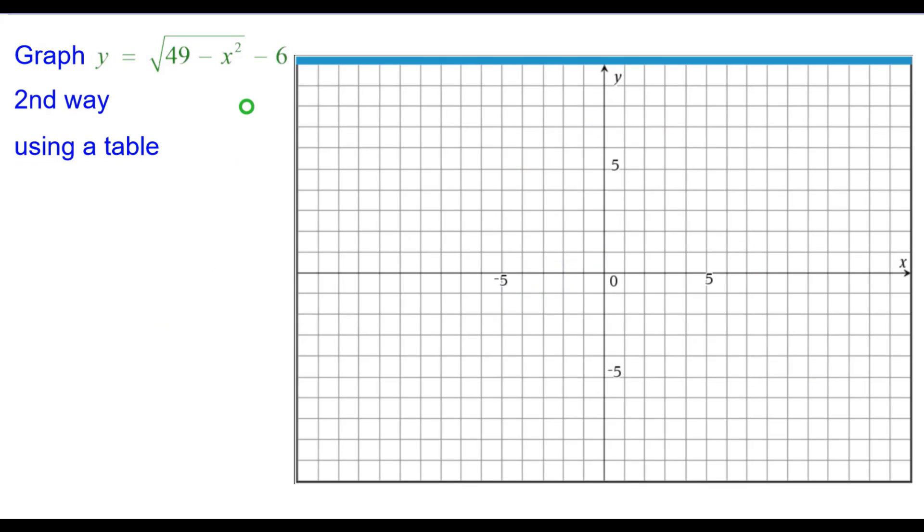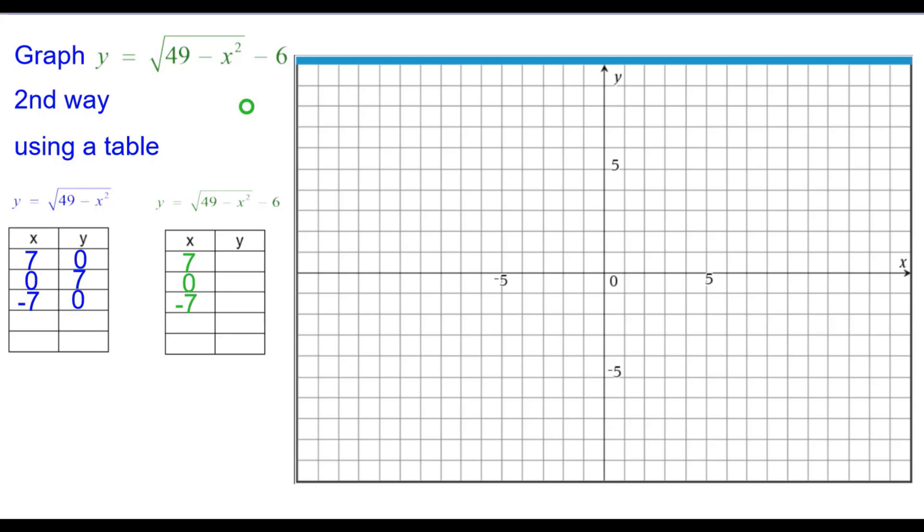Second way, using a table. For the semicircle, we really only need three points there. And on the green graph, we're going to have to subtract 6 from each of the y coordinates of the blue one, because that's what it says to do in the equation.